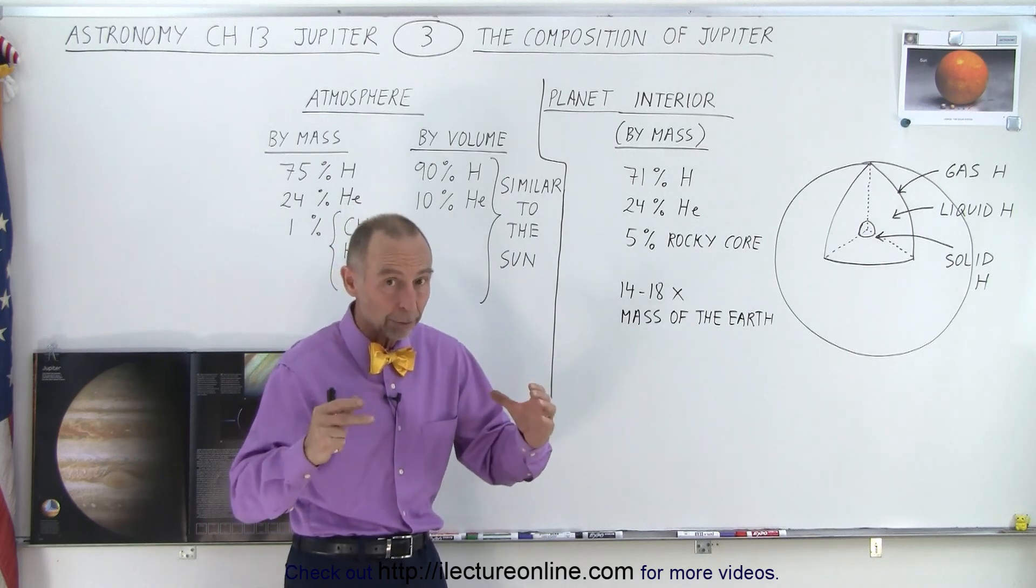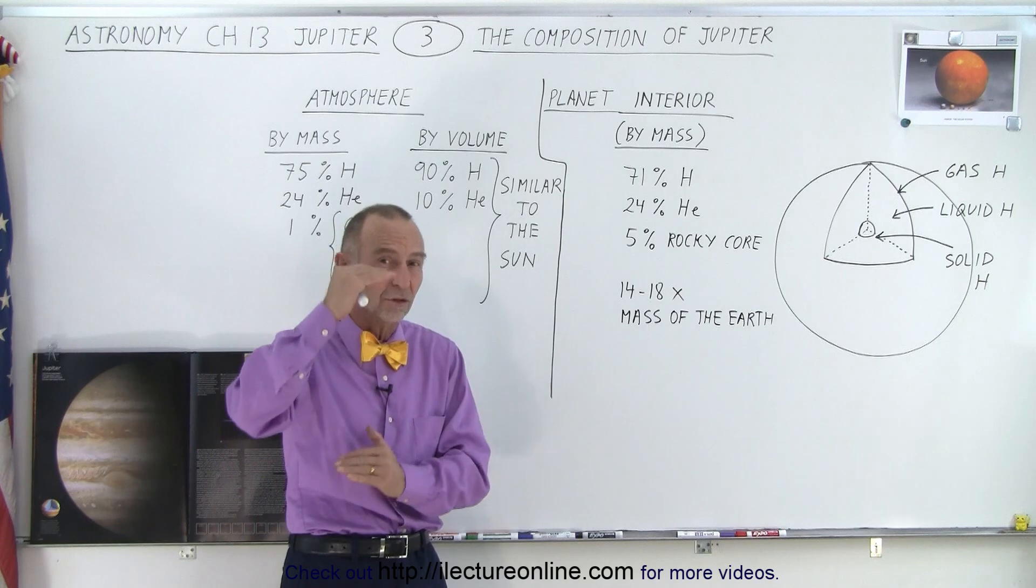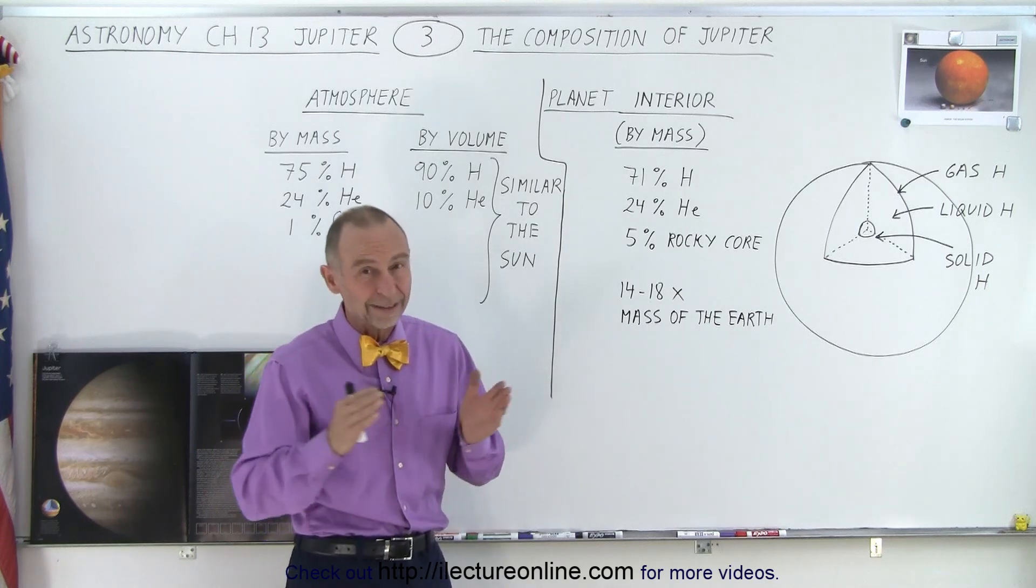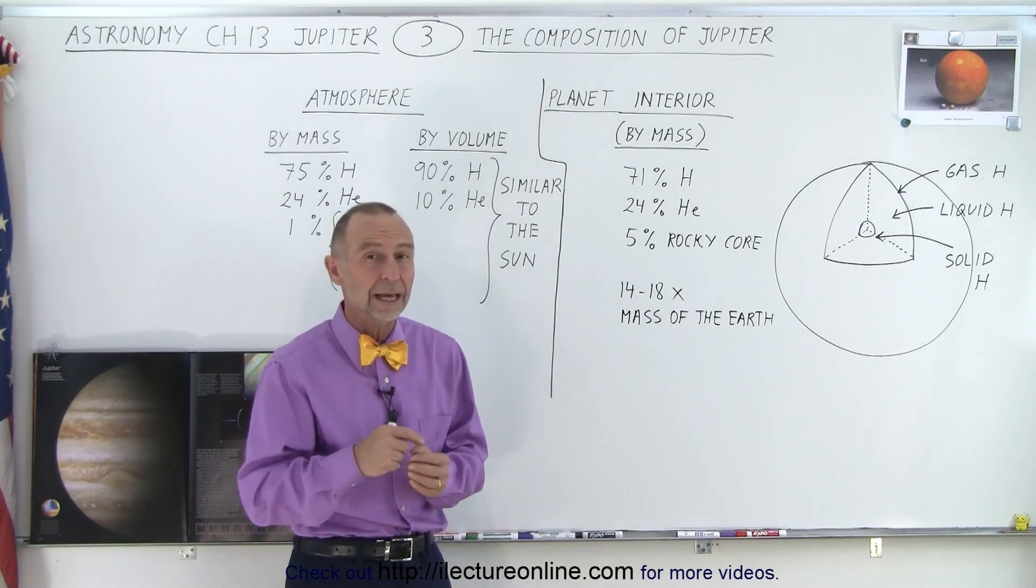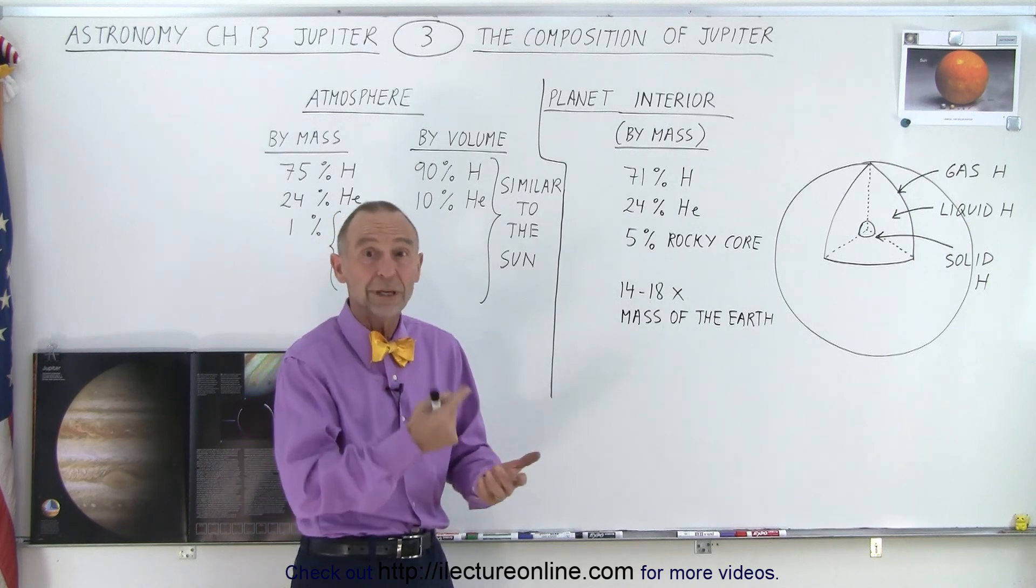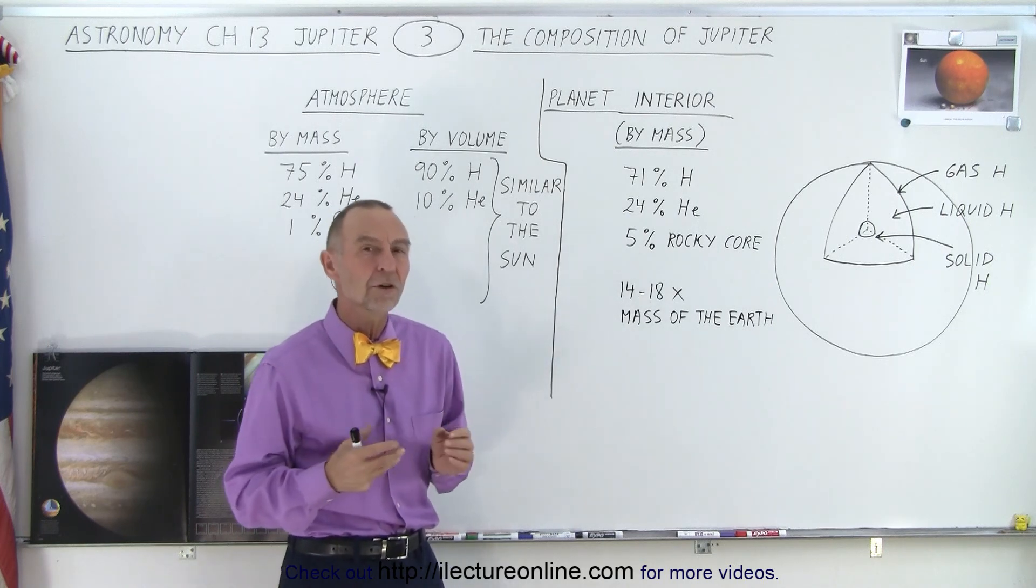In the case of Saturn, Saturn has a bigger bulge, about 10% wider than it's tall. In the case of Jupiter, it's only about 7% wider than it's tall. Jupiter actually is bigger and rotates faster, so we probably should see a bigger bulge.